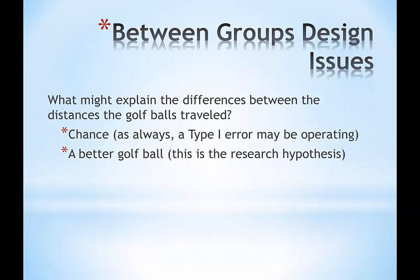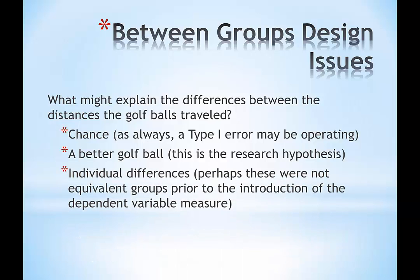It's not that golfers by chance hit their balls further, but that the golf ball itself is a better ball. That's the research hypothesis. But there's also a third explanation: individual differences. Maybe the five golfers in group two just tend to be stronger golfers than group one. Random assignment to groups didn't do a great job, and maybe there were differences in the groups before the golf balls were even introduced.